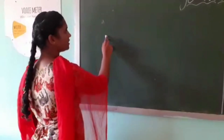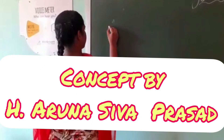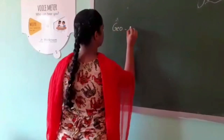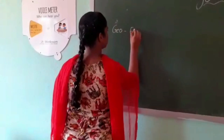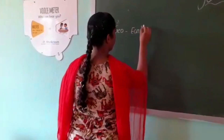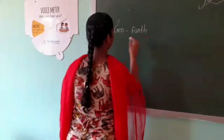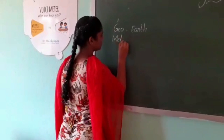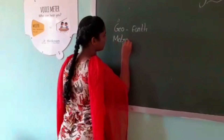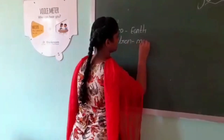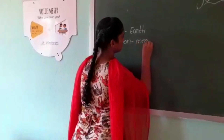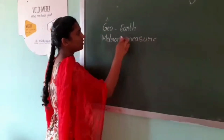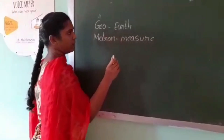Geometry is the word derived from Greek where 'geo' means earth and 'metron' means measure. So, measure of earth is called geometry.